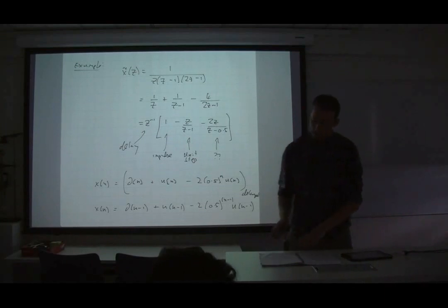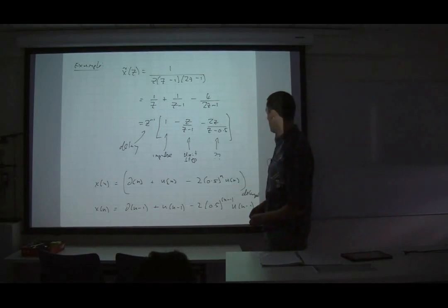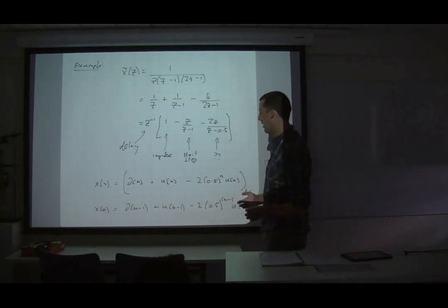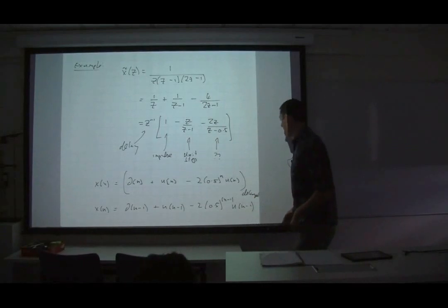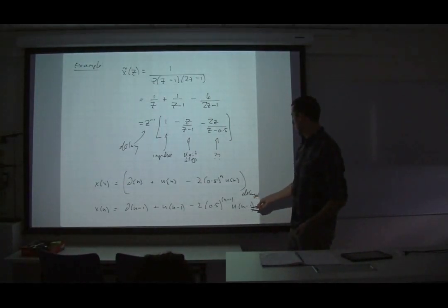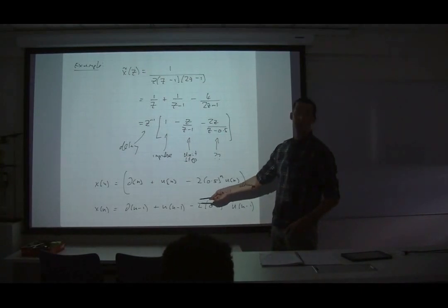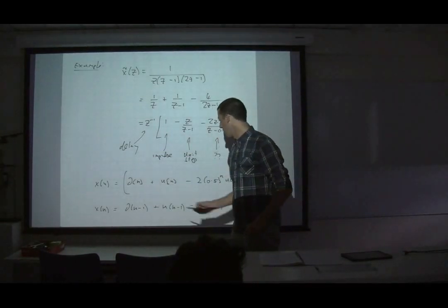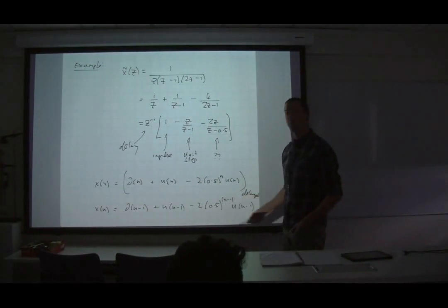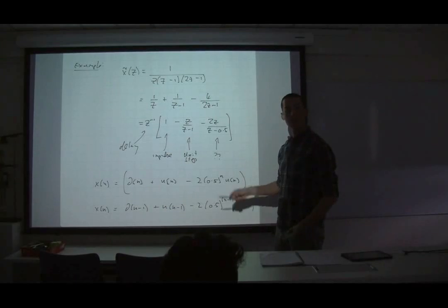When N equals one, the delta spikes, the unit step kicks in giving 1 plus 1 equals 2, and the decaying term gives minus 2, so we get zero at that point. Then the unit step persists, the delta goes away, and the 0.5 to the N term decays. In the long run we have a DC value of one with a decaying transient at the beginning.